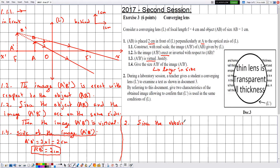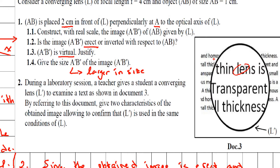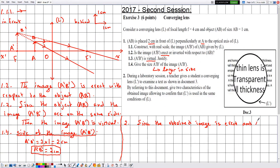The obtained image is erect and larger in size than the object. These two characteristics match those of A'B' — which is also erect and larger in size than AB. Therefore, lens L' is used in the same conditions as L.